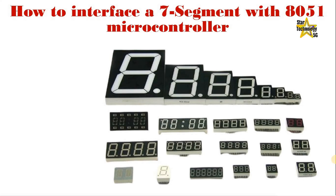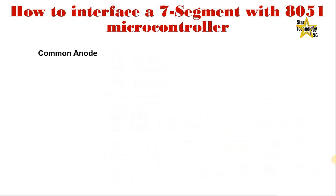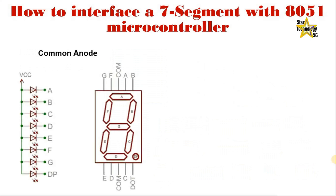7-segment displays are basically available in two different types: Common Anode and Common Cathode. In the Common Anode display, all the anode connections of the LED segments are joined together to the positive supply, or logic high. The individual segments are illuminated by applying a ground or logic low signal via a current limiting resistor to the cathode of the particular segment.